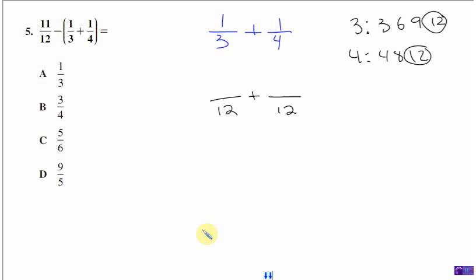So to get twelve on the bottom here, I had to multiply the three by four. Whatever I do to the bottom, I have to do to the top. One times four, I get four. Same deal here. Four times three, this time gives me twelve. Therefore, one times three, you must get three on top.